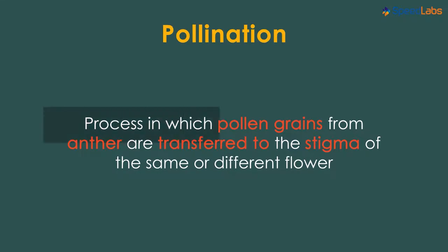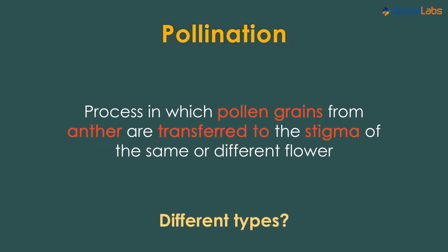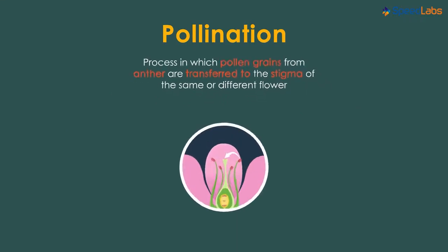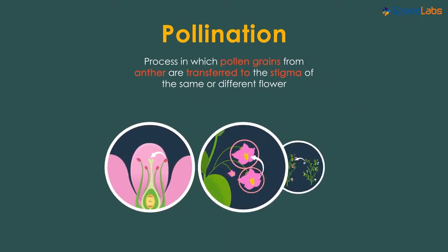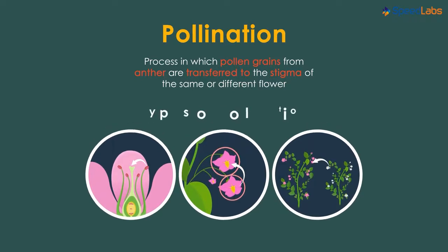So do you think that the definition is trying to give us a hint that pollination is of different types? Yes, that's correct. The fact that pollination can occur in the same flower or can involve two different flowers of the same or different plants gets us to the types of pollination.